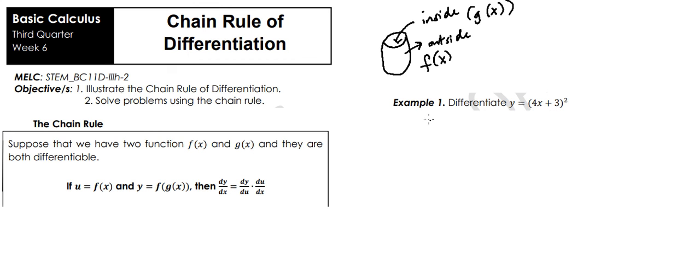If we create a substitution, we have u. Let's say our u is what's inside, which is 4x plus 3. We have to get the derivative of that. So derivative of 4x plus 3 is just 4.